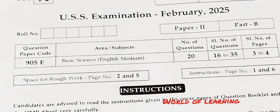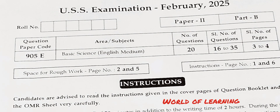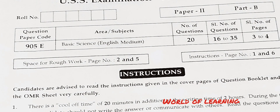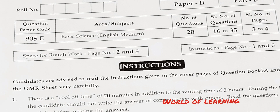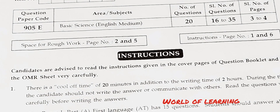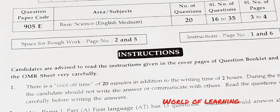We are discussing the USSS Examination February 2018, Part 2 and Part B — that's 20 questions, questions 16 to 35, Basic Science. We are going to discuss the answers in English medium. Let's go to the questions.